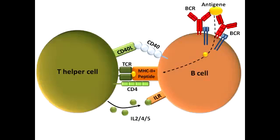Once this complex has been formed, it's going to get expressed on the B-cell surface — you can see this in the picture where it shows MHC2 plus the peptide. This MHC2 and antigen complex is now going to get recognized by the T-cell receptors on the T-helper cell, and this makes up the first signal.